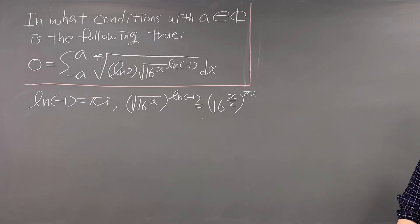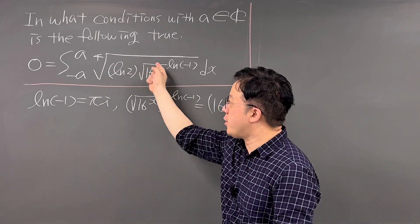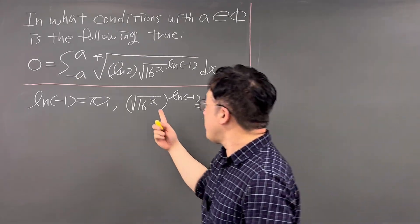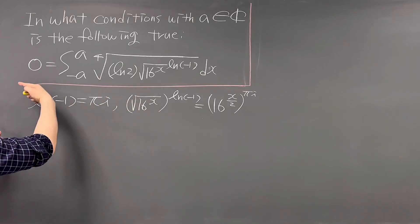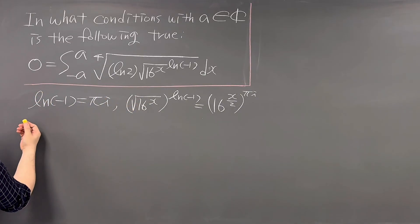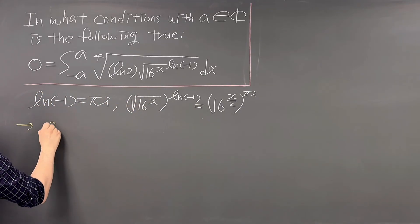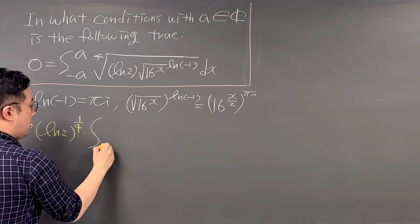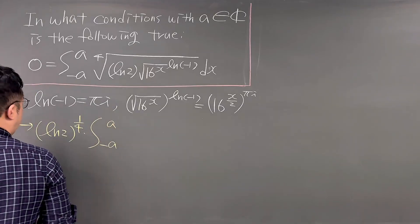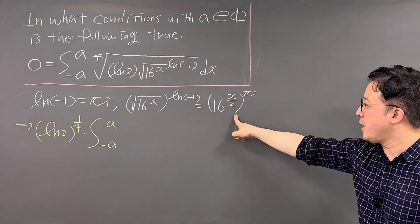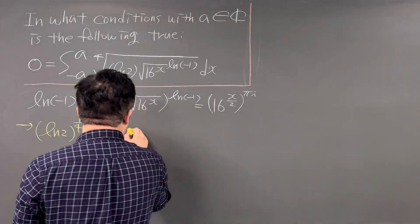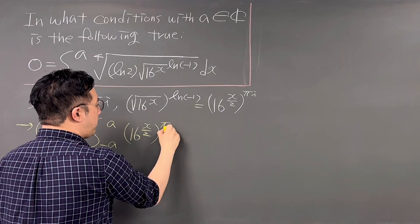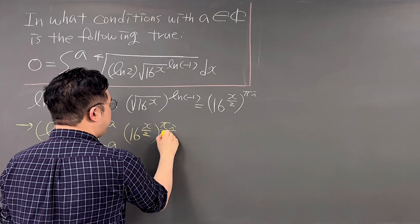Also notice that LN(2) is a constant under the fourth root, so we can rewrite the integral by pulling LN(2)^(1/4) outside of the integral. So this is the same as LN(2)^(1/4) times the integral from negative A to A of 16^(x/2) to the power of πi, all to the power of 1/4, dx.